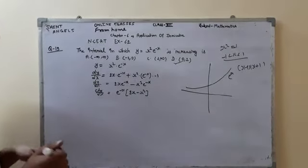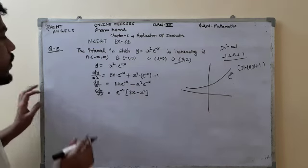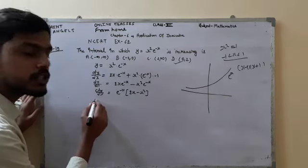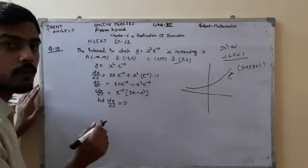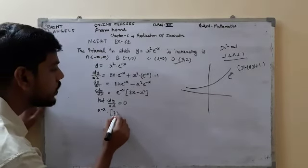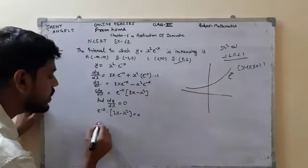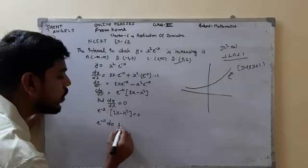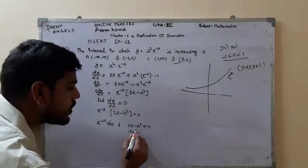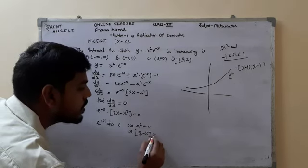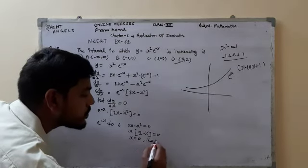Whenever we are asked to find the interval in which a function is increasing or decreasing, first find the slope, then put the slope equal to 0 to find the critical points. Setting dy/dx = 0: e^(-x)(2x - x²) = 0. Since e^(-x) cannot equal 0, we have 2x - x² = 0, giving x(2 - x) = 0, so x = 0 or x = 2. These are our critical points.